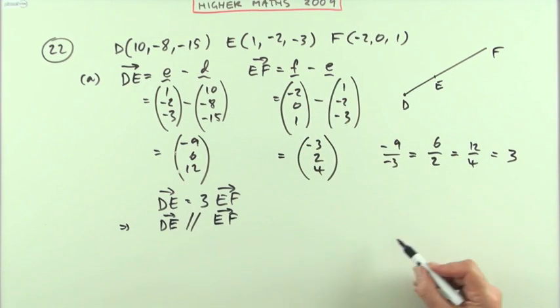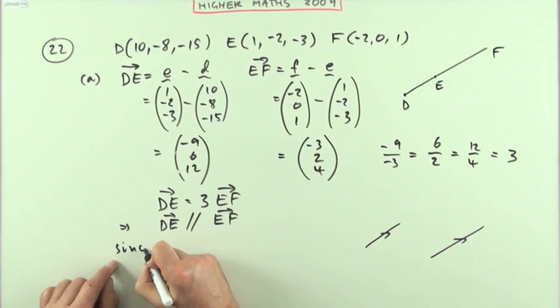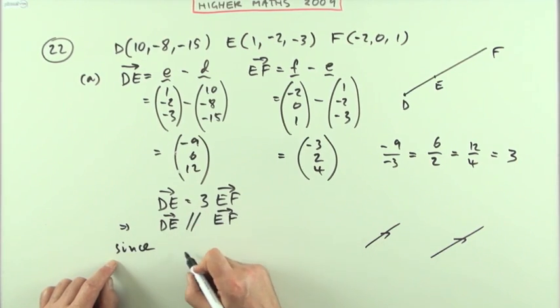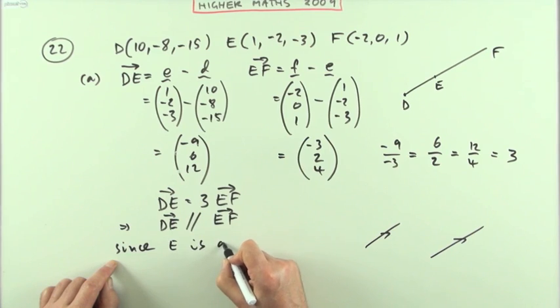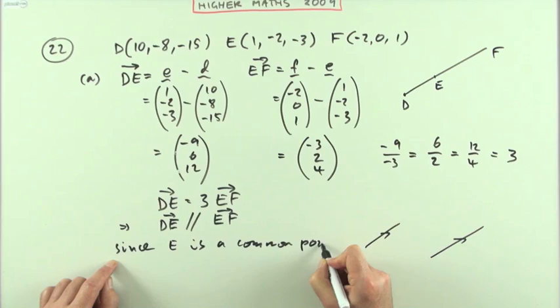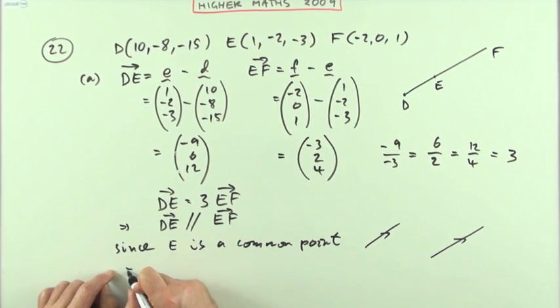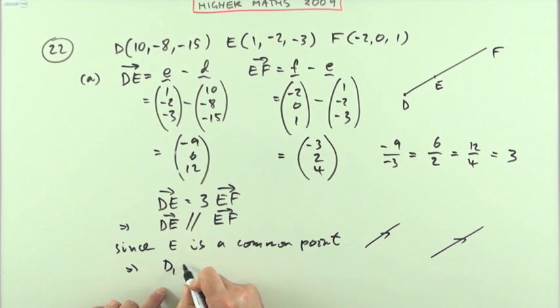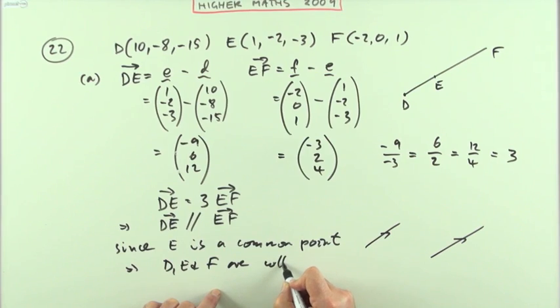It's a multiple of it, so that means if it's a multiple it must be parallel to it. That doesn't guarantee a straight line because you can have two separate vectors that are parallel but aren't joined together. So I'll have to make another statement: since E is a common point, I can see with certainty that D, E, and F are collinear.